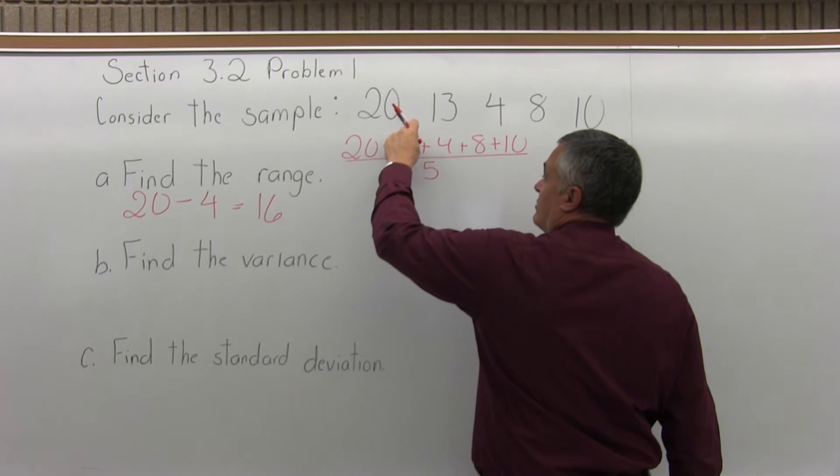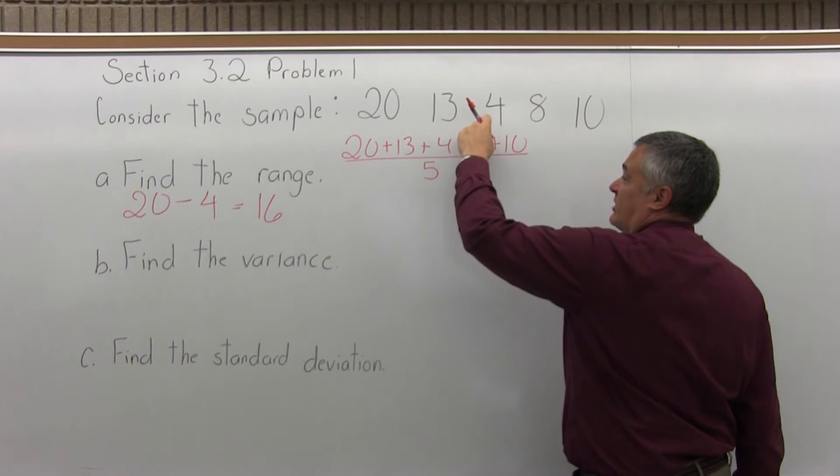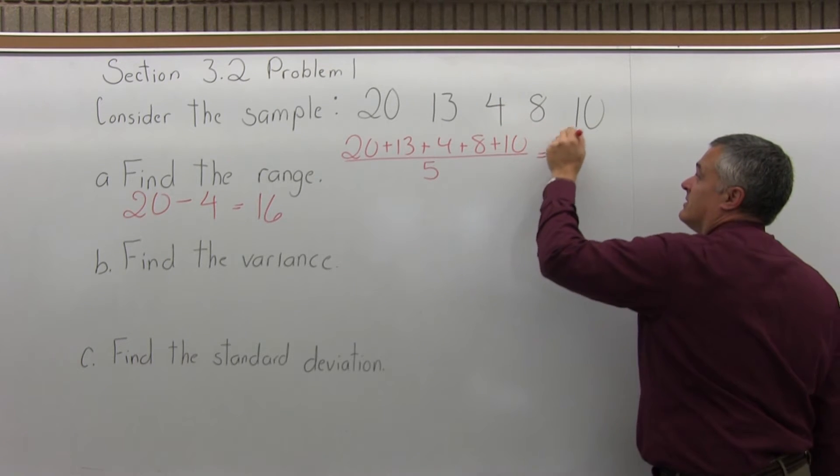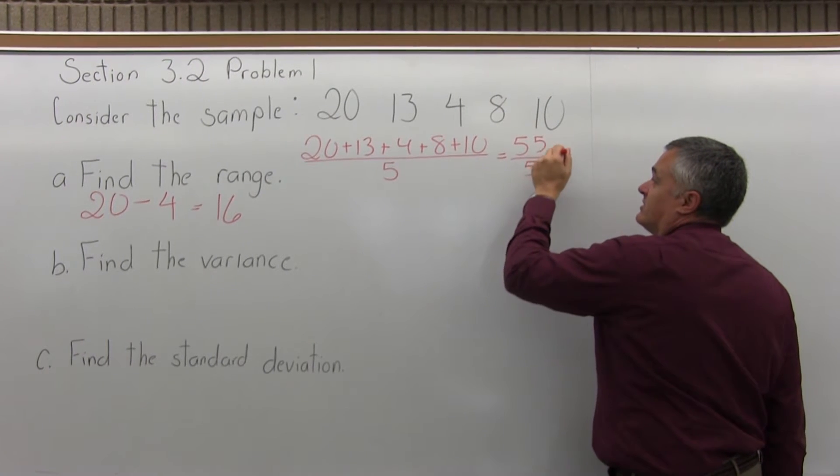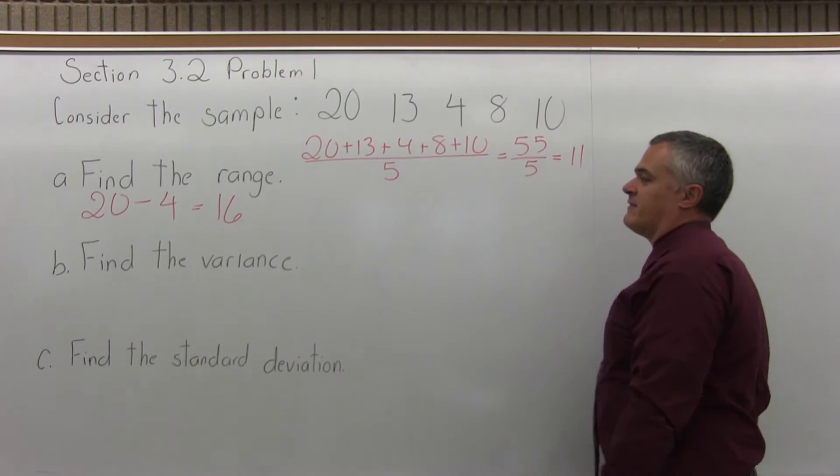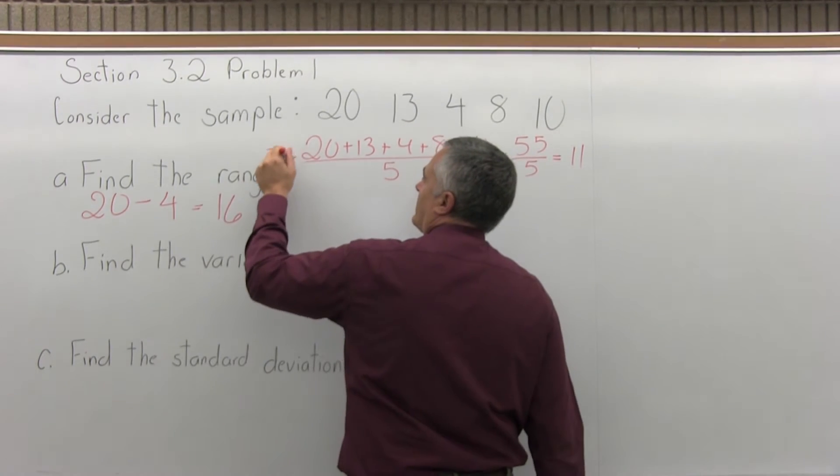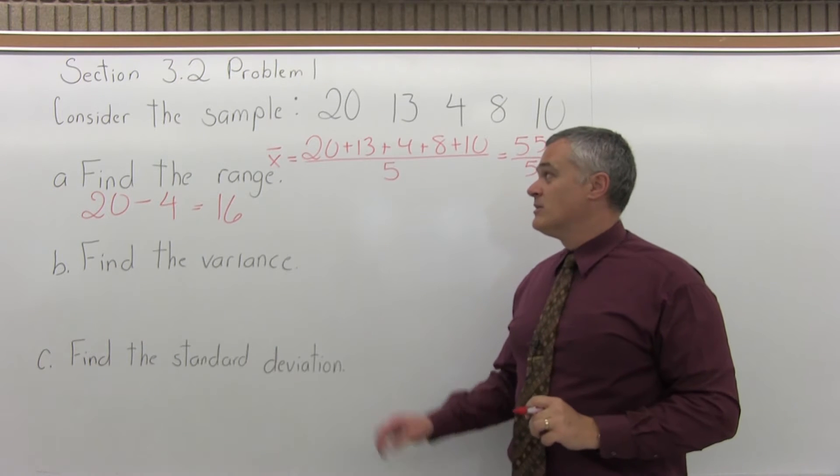20 and 13 is 33. 33 and 4 is 37. 37 and 8 is 45. 45 plus 10 is 55. We divide by 5 because there are 5 data values. 55 divided by 5 is 11. And we label that x-bar. That's the symbol for the mean of a sample. That was step 1.